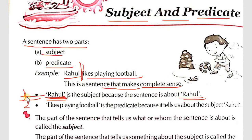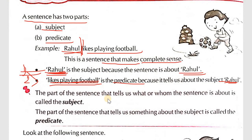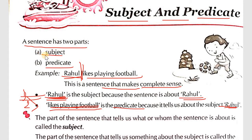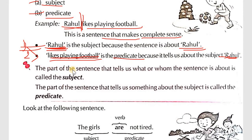Second: 'Likes playing football' is the predicate, because it tells us about the subject Rahul. So 'likes playing football' is the predicate and 'Rahul' is the subject. You can see which part of a sentence is the subject and which is the predicate.